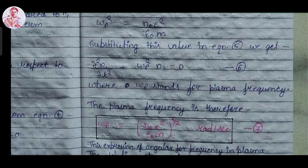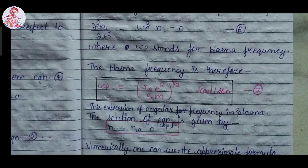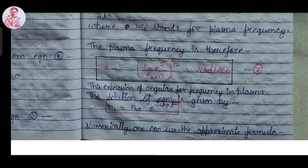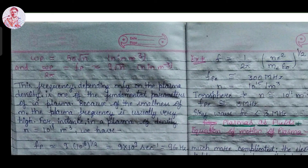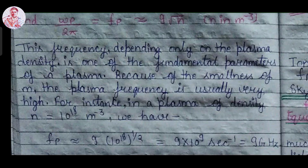The plasma frequency can therefore be written as omega_p = sqrt(N_0 e^2 / (epsilon_0 m)) radians per second. This is the equation for plasma frequency. The solution of this equation is N_1 = N_0 e^(-i omega_p t). Numerically, omega_p ≈ 50 sqrt(N), where N is in m^-3, and the frequency f_p = omega_p / (2 pi) ≈ 9 sqrt(N). Since the frequency depends only on the plasma density and the smallness of electron mass m, the plasma frequency is usually very high.